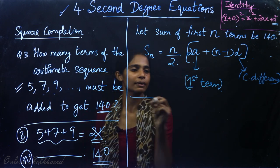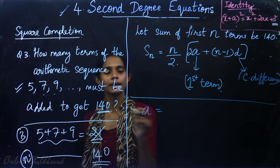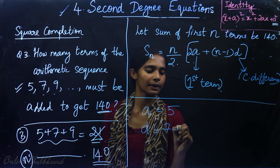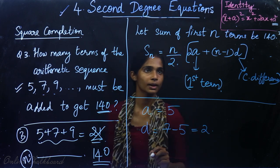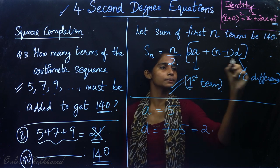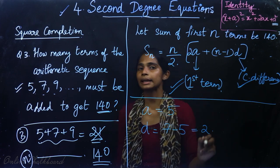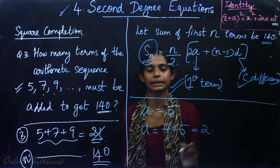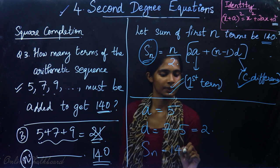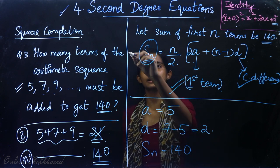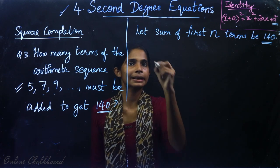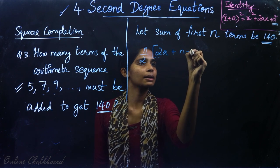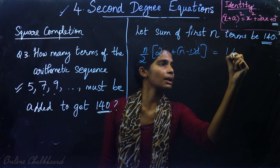For the sequence 5, 7, 9: the first term a is 5, and the common difference d is 7 minus 5, which equals 2. Since Sₙ is 140, we substitute these values: n by 2 into (2 into 5 plus n minus 1 into 2) is equal to 140.